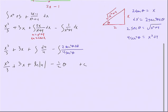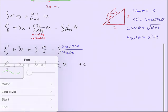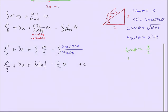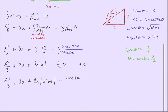Now we put back our substitutions. We said that tangent of theta equals x over 2, so theta equals the arctangent of x over 2. Putting in the original u — which is x squared plus 4 — into the ln, and replacing theta with arctangent of x over 2. Remember, that's still over 2. And that is the antiderivative of x to the fourth plus 7x squared plus 2x plus 11 over x squared plus 4, with respect to x.